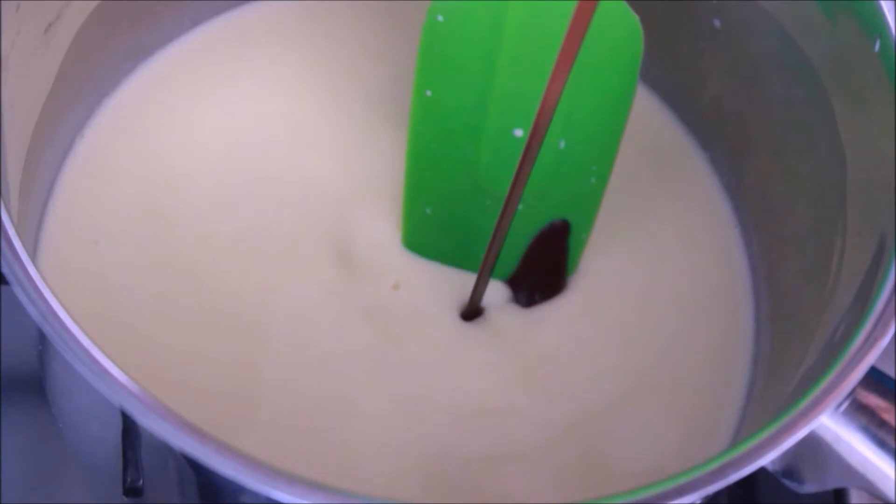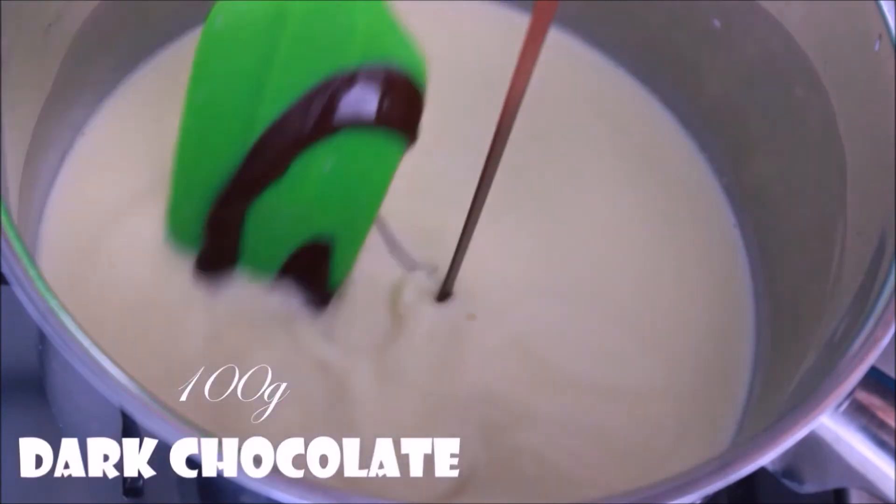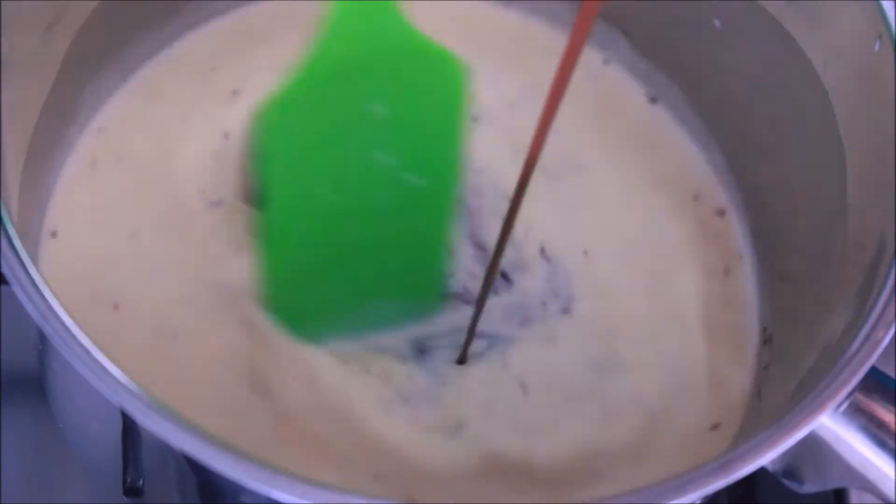The gelatin that we have prepared earlier, you can place that in the microwave for a couple of seconds, then add that to the mixture. Add 100 grams of melted dark chocolate of your choice.